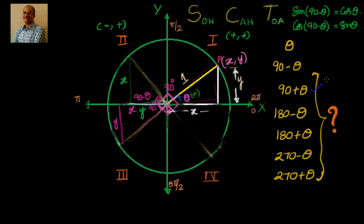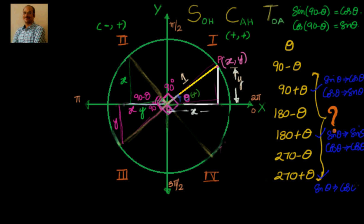Let's note our observations. For 90 plus theta: sine becomes cosine, cosine becomes sine. Whereas for 180 plus theta: sine remains as sine, cosine remains as cosine. Similarly, for 270 plus theta, you can see that the two triangles are again congruent, so sine becomes cosine and cosine becomes sine.